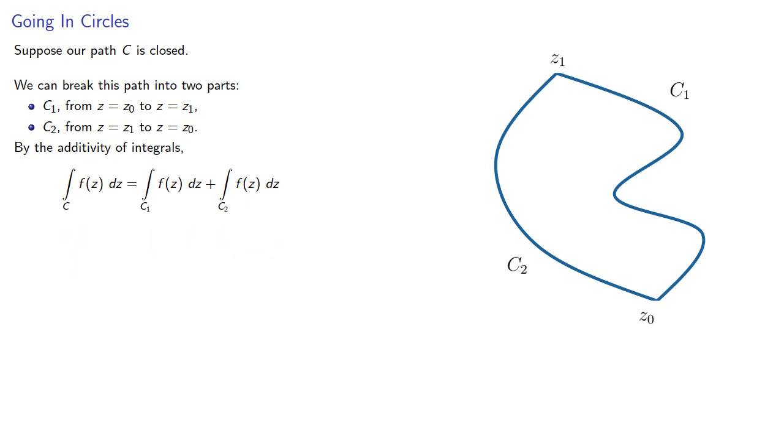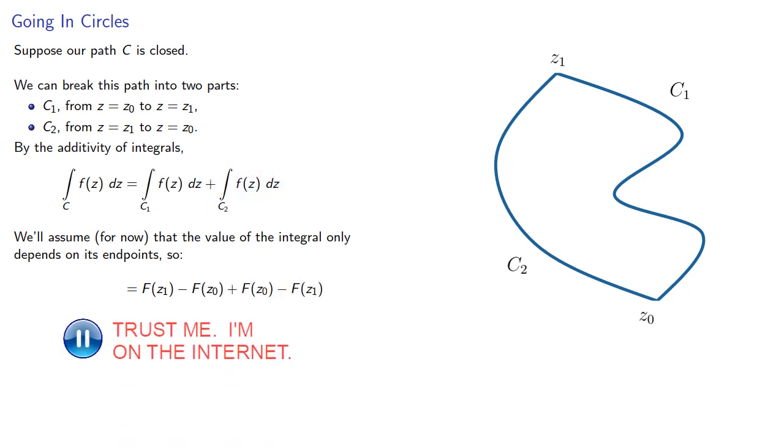We'll assume, for now, that the value of the integral only depends on its endpoints, so then this first integral is some function at Z1 minus the same function at Z0. And the second integral will be some function at Z0 minus some function at Z1. And if we simplify, we get zero.